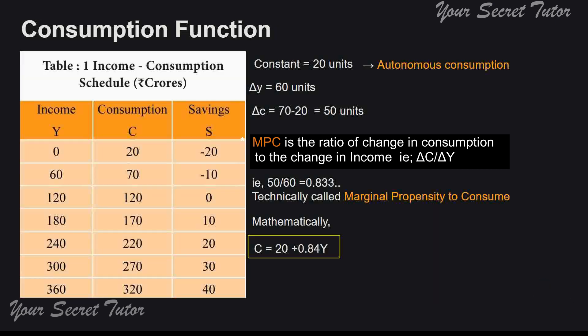Mathematically you can say it as C is equal to 20 plus 0.84 multiplied by Y. So consumption is equal to 20 plus 0.84Y.